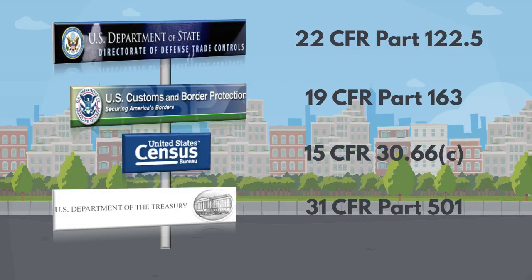BIS is one of several federal agencies with Record Keeping Requirements for export transactions, so make sure that you are in compliance with Record Keeping Requirements of any other agencies that have jurisdiction over your transactions. These include: U.S. Department of State Directorate of Defense Trade Controls, 22 CFR Part 122.5; U.S. Customs and Border Protection, 19 CFR Part 163; U.S. Census Bureau, 15 CFR 30.66C; and U.S. Department of the Treasury, 31 CFR Part 501.